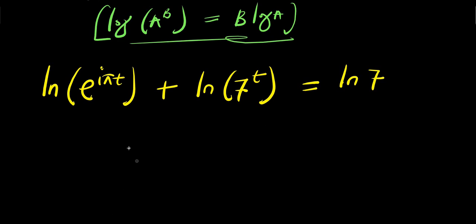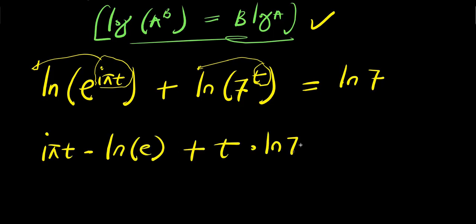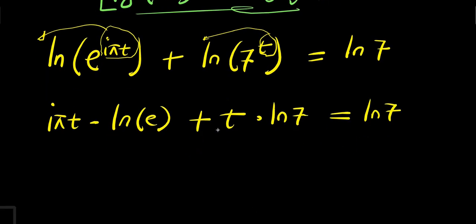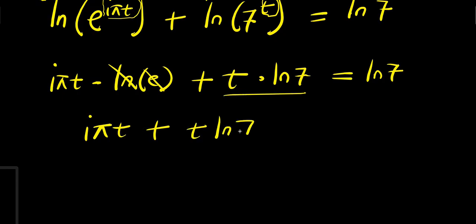So right now, we are going to apply the second property, meaning that i pi t will come in front of the natural log, and the t here will come in front of the natural log. So we have i times pi times t times the natural log of e, plus t times the natural log of 7, equals the natural log of 7. We eliminate the natural log of e since ln(e) = 1, giving us i times pi times t plus t times the natural log of 7 equals the natural log of 7.